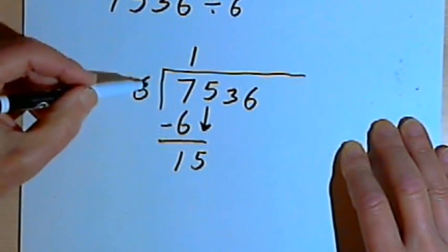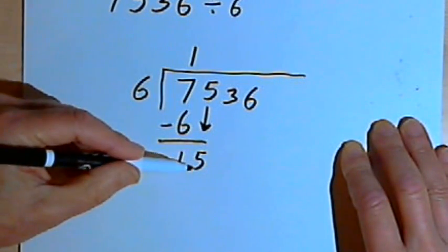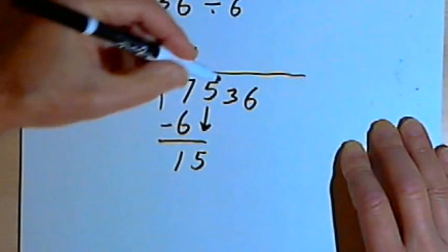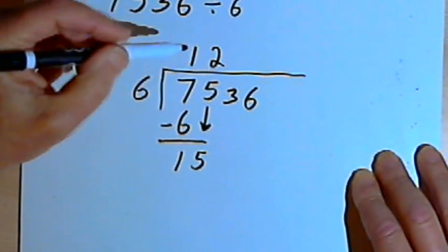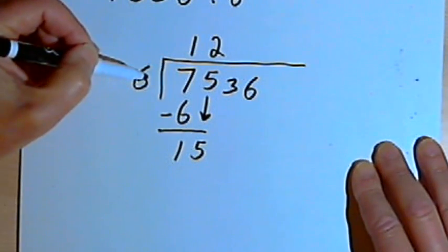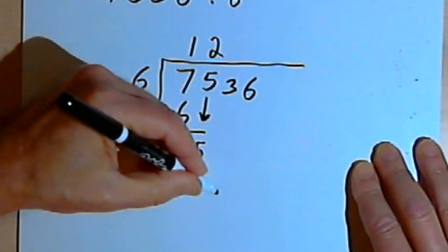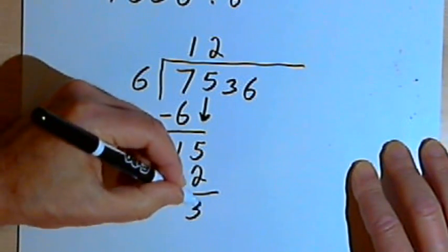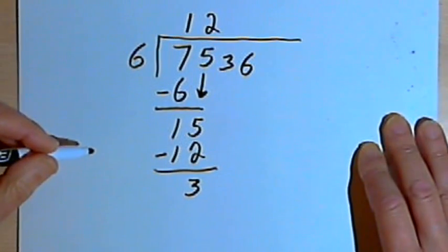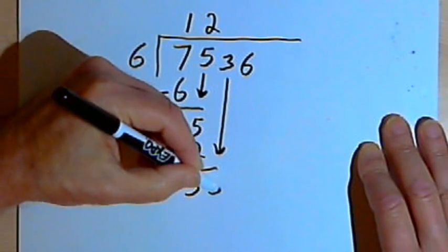Now what I'm going to do is bring down the next digit. So the next digit was a 5. I'm going to bring that down and put it next to the 1. So now I've got 15. And now I start again. I divide the 6 into the 15. 6 goes into 15 two times. So I'll write a 2 in the next place, over the 5, and multiply 2 times 6. 2 times 6 is 12. I'll subtract 15 minus 12. That's 3. I'm going to bring down the next digit, which is also a 3. So I've got 33.